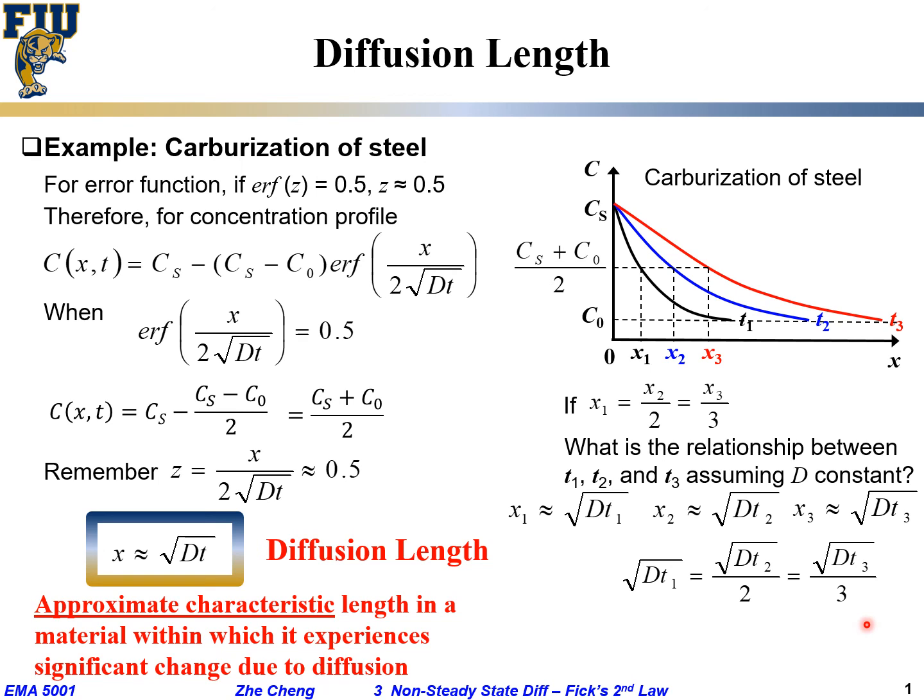D is constant, so we are going to have t1 is a quarter of t2. It means, if I don't change diffusion coefficient, I got a profile at t1, in order to go to t2, I have to quadruple my diffusion time. In order for my impacted, or so-called characteristic depth to double. Similarly, if I want it to be triple, I have to nine times my so-called processing time, if I keep the same diffusion coefficient, or the same temperature.